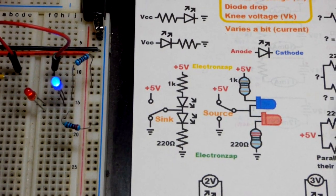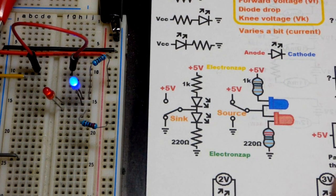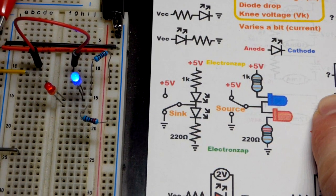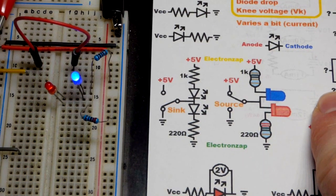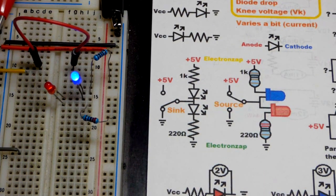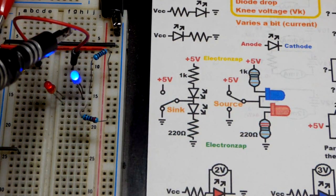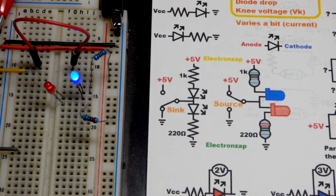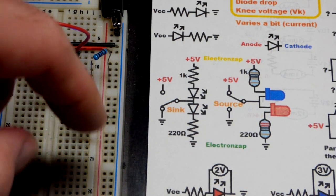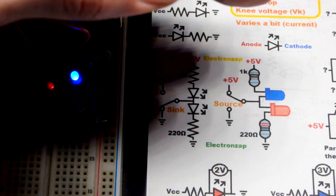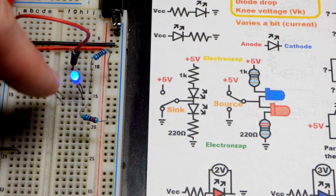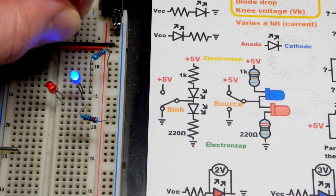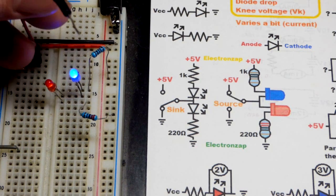I built this circuit to demonstrate sourcing and sinking current. Usually it's the output of an integrated circuit — in this case I'm just using a jumper. Both of these LEDs are lit right now with the same small amount of current trickling through. The blue LED, as I said before, is just naturally brighter.